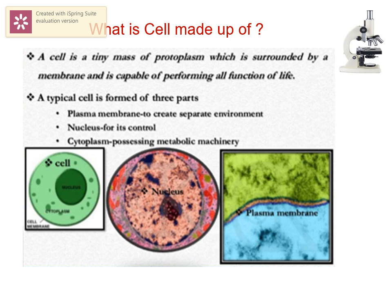What are the different components of a cell? A cell is a tiny mass of protoplasm surrounded by a membrane, capable of performing all functions of life. A typical cell has three parts: plasma membrane, nucleus for control, and cytoplasm containing many organelles.